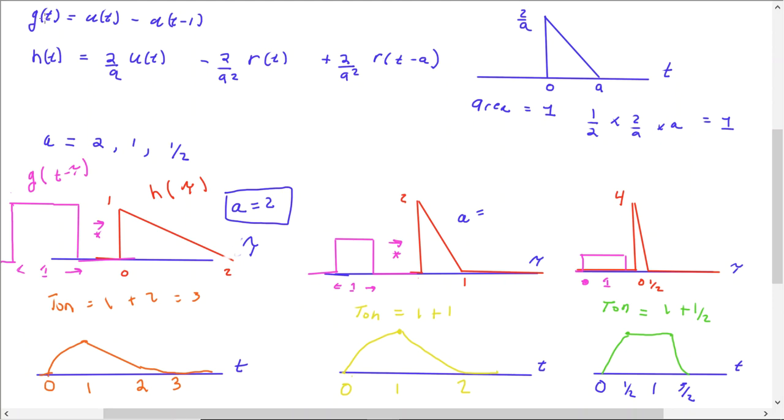For this example, G of T is just going to be a rectangle function of one unit long and one unit high, and we can see that over here. The transfer function will be two divided by a ut minus two divided by a squared rt plus two divided by a squared rt minus a.